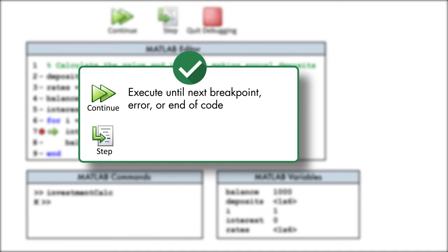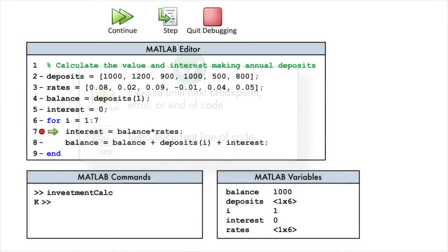Or, we can use the step button to execute only the current line of code, which is indicated by the green arrow. Since we don't know where the error is, let's use the step button to execute line 7 and advance the code one line.